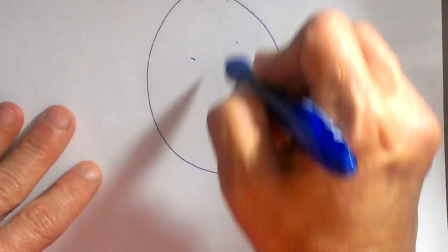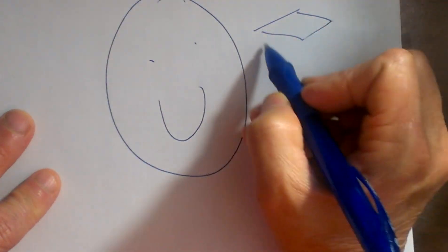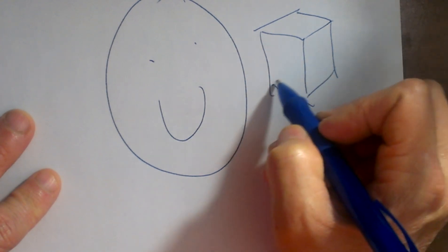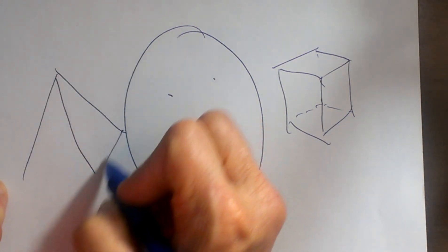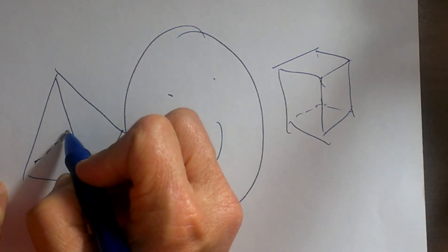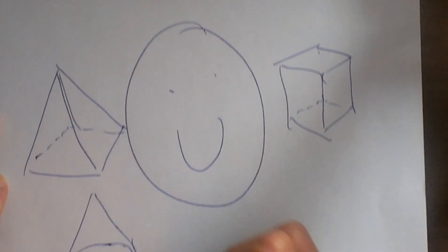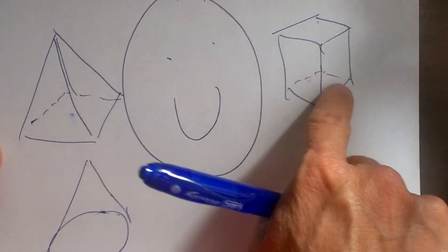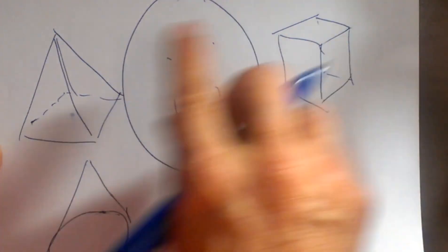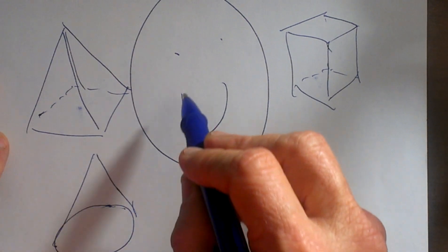That's all for today. Prisms have two parallel bases, while pyramids and cones have a point at the top. The key ratio to remember is that the volume of a pyramid or cone is one third the volume of the corresponding prism or cylinder. Hopefully this helps — have a great day!